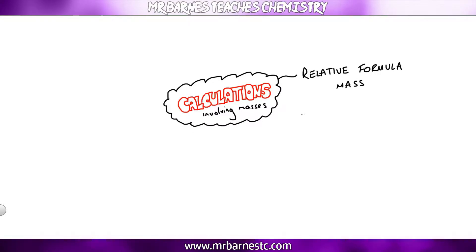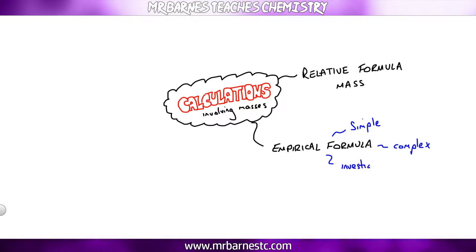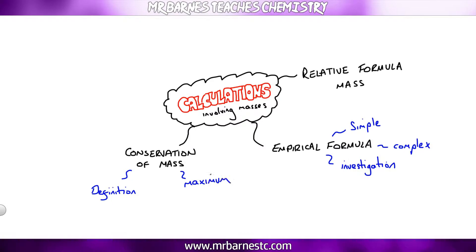Relative formula mass. Empirical formula — you need to be able to work out the ratios, the complex calculations, and the investigation. Conservation of mass: what it is and how you can work out the maximum mass when given the masses of reactants or products. And finally, concentration in grams per decimetre cubed — how to convert centimetres cubed to decimetres cubed and work out the concentration.